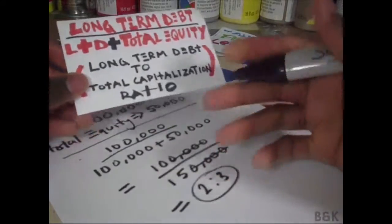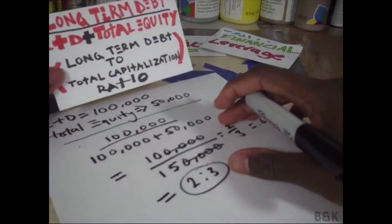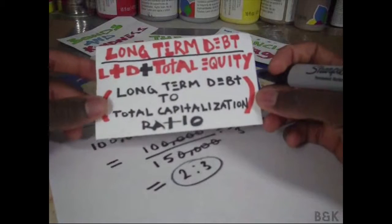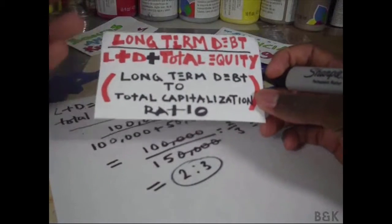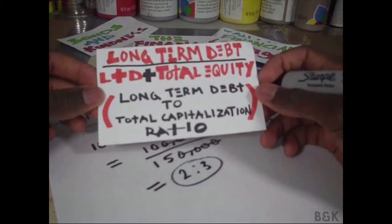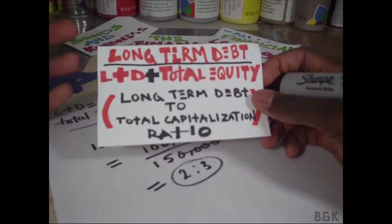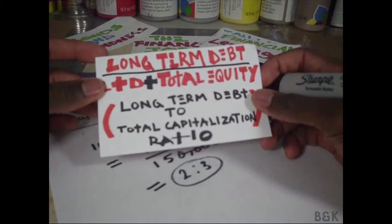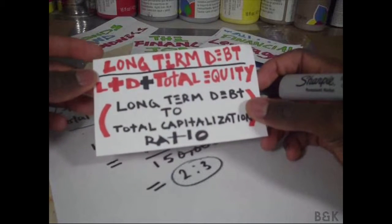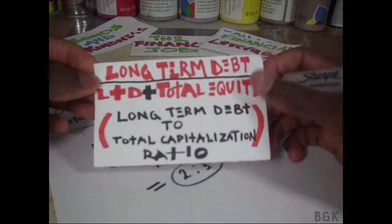I like to keep things in ratio form, so: for every $3 of total capitalization, we owe $2 after a year.